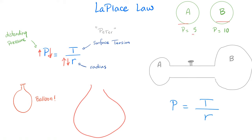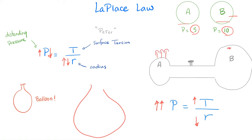Looking at bubbles A and B: pressure in A is 5, pressure in B is 10. B has higher pressure and therefore higher surface tension (assuming same radius). Now, if balloon A is smaller and balloon B is larger with a valve between them, A has a smaller radius and therefore higher distending pressure — so air flows from A to B when the valve is opened. A will collapse as all its air goes to B.